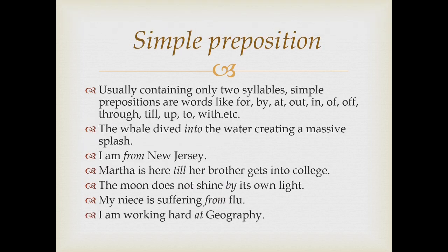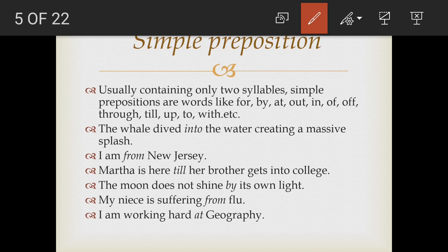The first is simple prepositions. Simple prepositions contain only one syllable. Simple prepositions are words like for, by, at, out, in, of, through, till, up, to, with, etc. These are all simple prepositions.